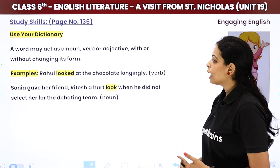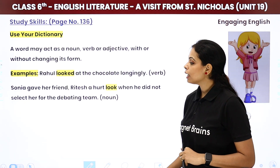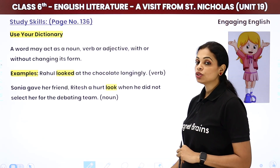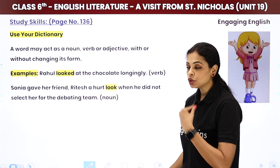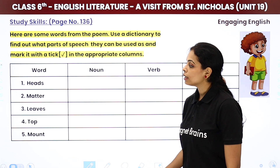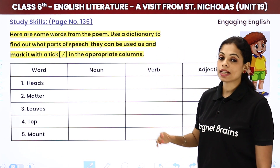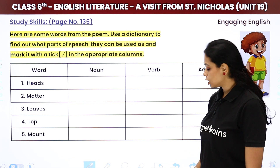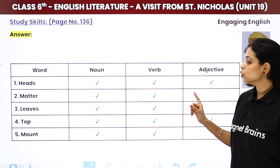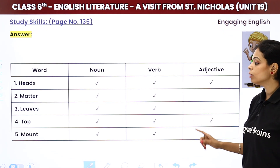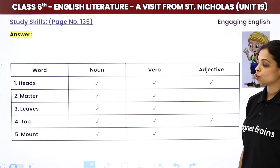Now the dictionary part. One word can act as different parts of speech — noun, adjective, or adverb. For example: 'Rahul looked at the chocolate longingly' — here 'look' acts as a verb. 'Sonia gave her friend a hurt look' — here 'look' acts as a noun. From the poem, the word 'heads' can be used as noun, verb, or adjective. 'Matter' and 'leaves' can be noun or verb. 'Top' can be noun, verb, or adjective. 'Mount' can only be used as noun or verb.